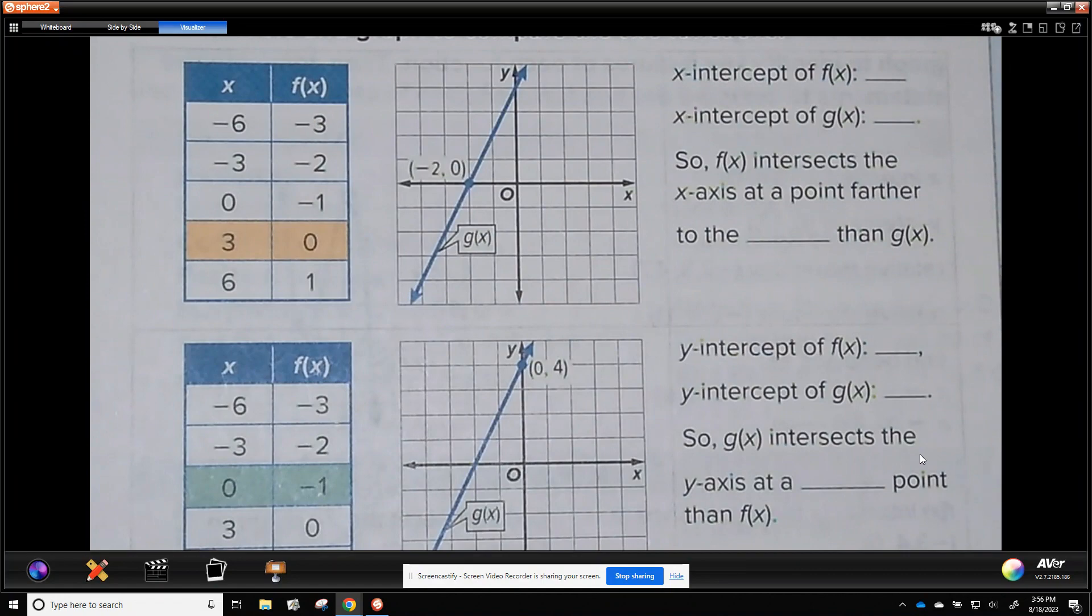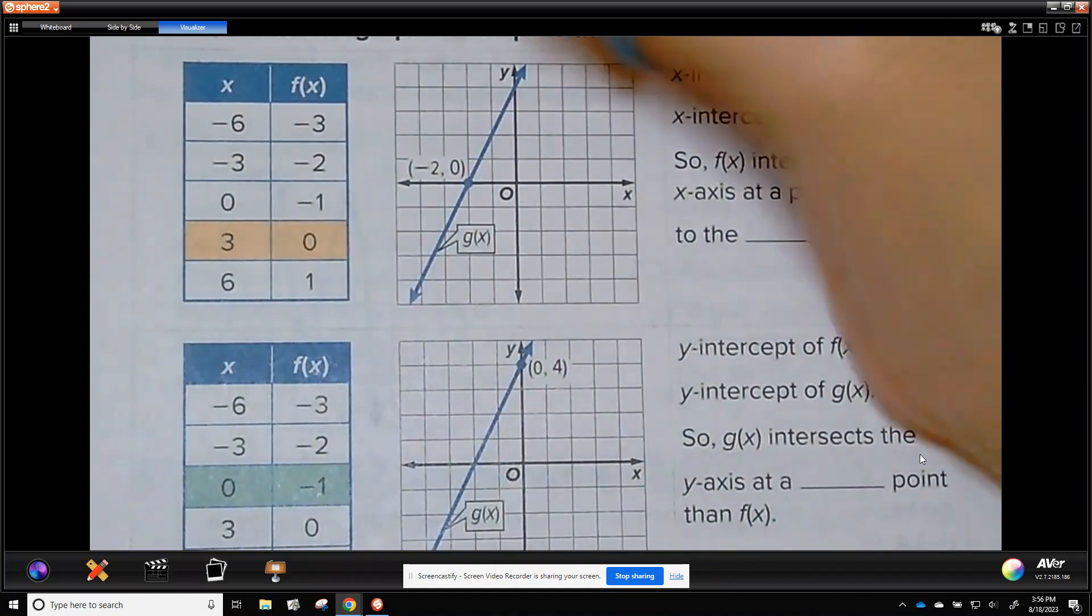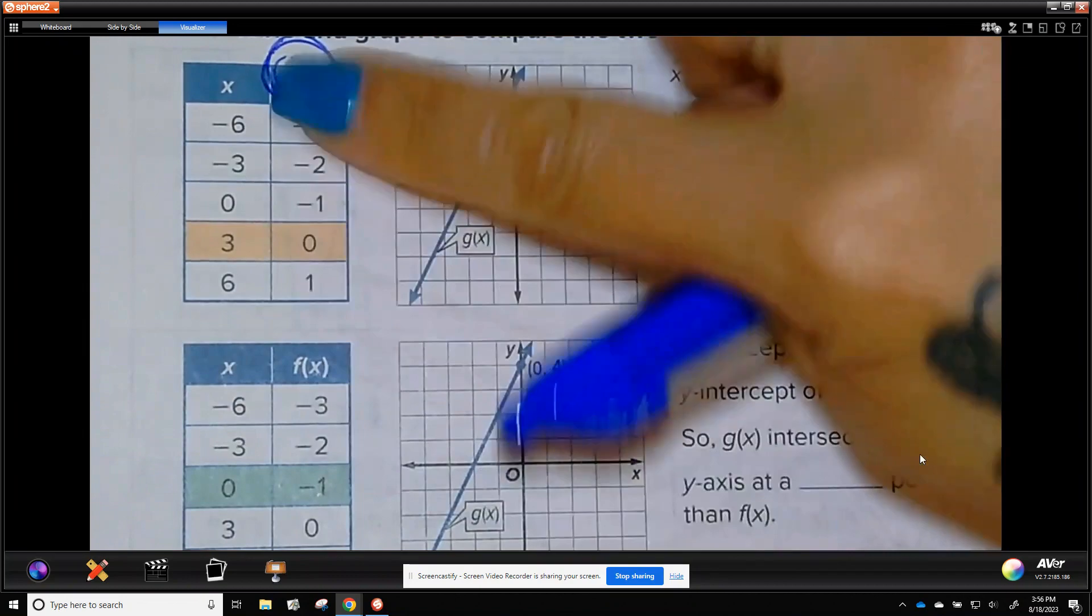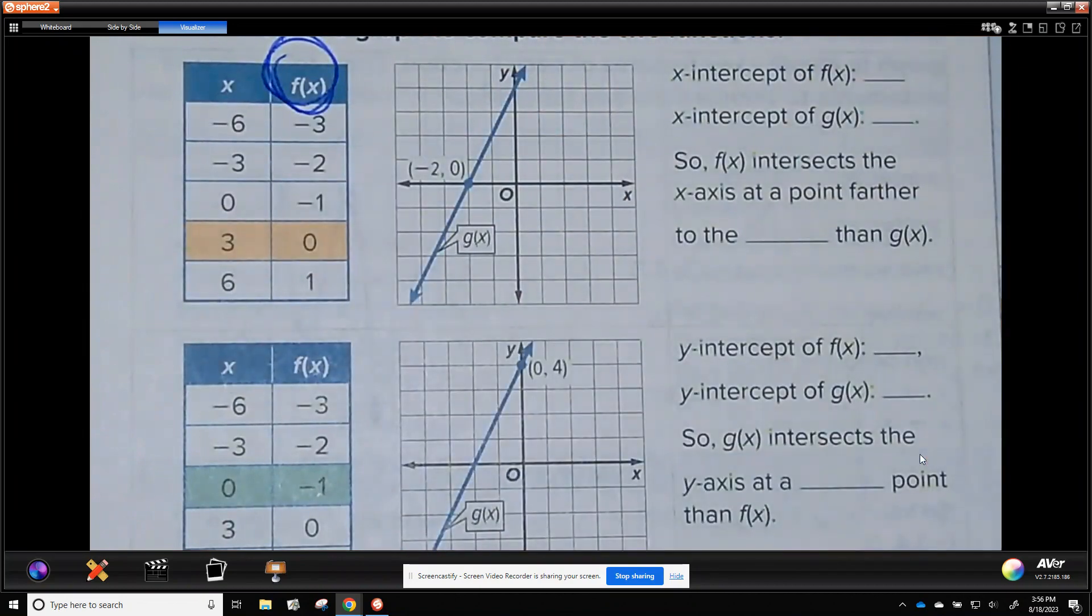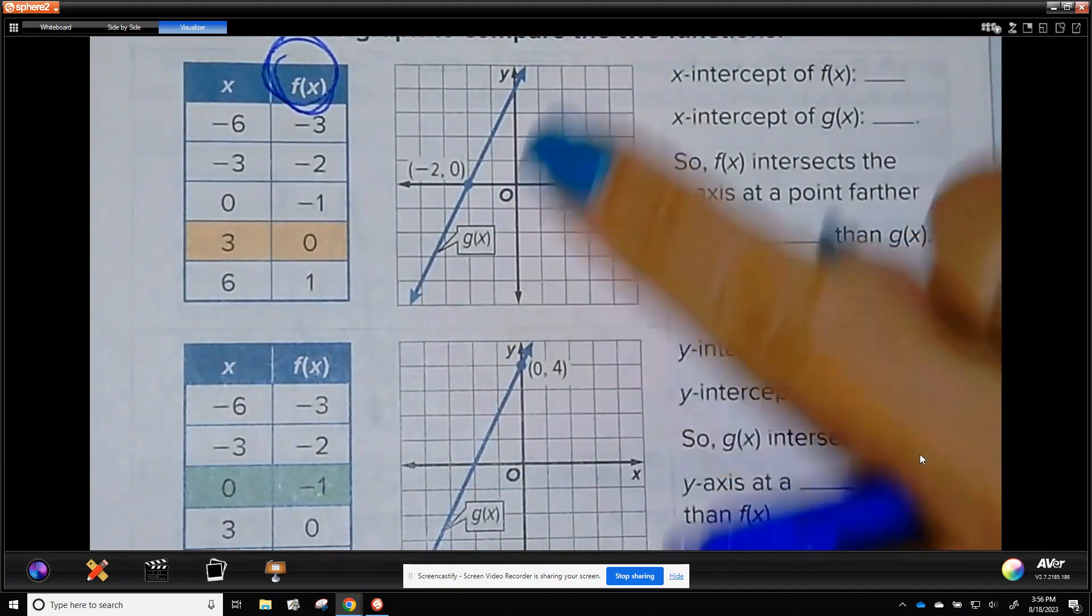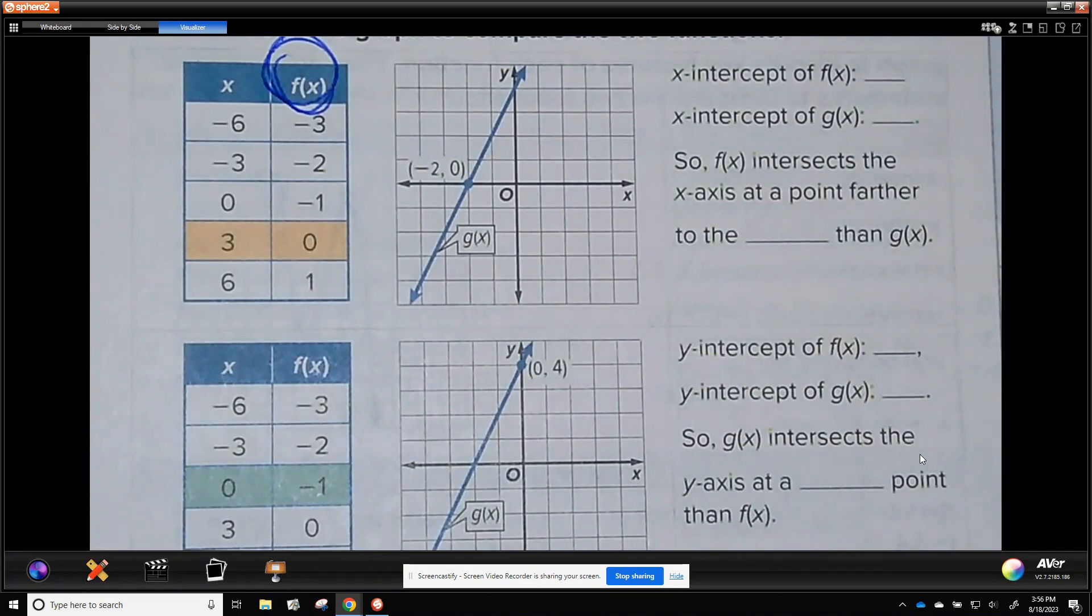A lot of people get confused with this because they see two things and they're used to seeing the table with the values for the graph. That is not the case. This is f of x, this is a function f of x, this is named f. This is a function g of x, this one's named g. They are not the same function.